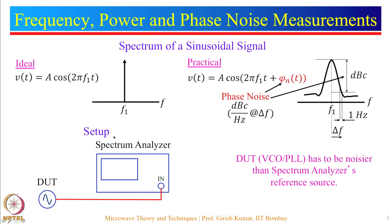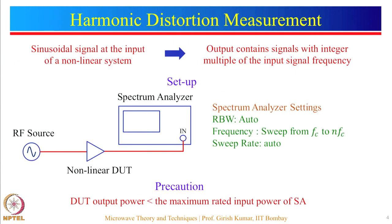Power and frequency measurements are straightforward. For harmonic distortion measurement, you have an RF excitation source for a non-linear DUT. The output of the DUT is connected to the input of the spectrum analyzer. We have to make sure that the output of the DUT — in the case of an amplifier — should not damage the spectrum analyzer circuitry. In that case you may want to put an attenuator between the DUT output and the spectrum analyzer input.